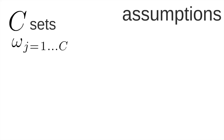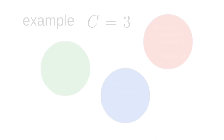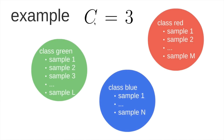First we have some assumptions. Suppose you have C sets and we represent them by Omega at index J, which means that J varies from 1 to C. Suppose that C is equal to 3, which means that we have three sets of samples divided into three independently created classes.